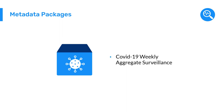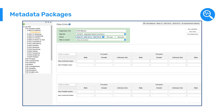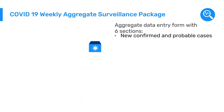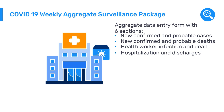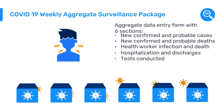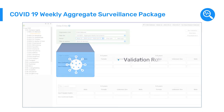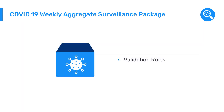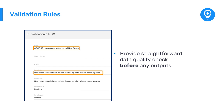One example was the COVID-19 Weekly Aggregate Surveillance Package, which features an aggregate data entry form with six sections to collect information on new confirmed and probable cases, new confirmed and probable deaths, health worker infection and death, hospitalization and discharges, tests conducted, and transmission classification. Along with this data set, the package included validation rules to perform checks on the data collected. An example of a validation rule would be that the number of reported COVID-19 cases cannot be greater than the number of tests performed. These validation rules provide a straightforward data quality check before any analytic outputs are created from the collected data.